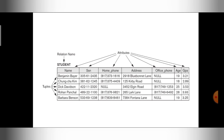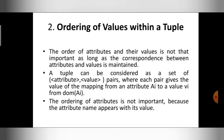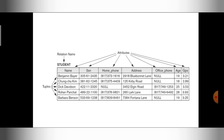SSN can be 305612435 for the first student and 381621245 for the second student. The ordering of these values is not important — if you know the attribute name, you can easily find the value of a particular record. If I know SSN and the value 305612435, I can easily identify that this value belongs to the first student, Benjamin Bayer.